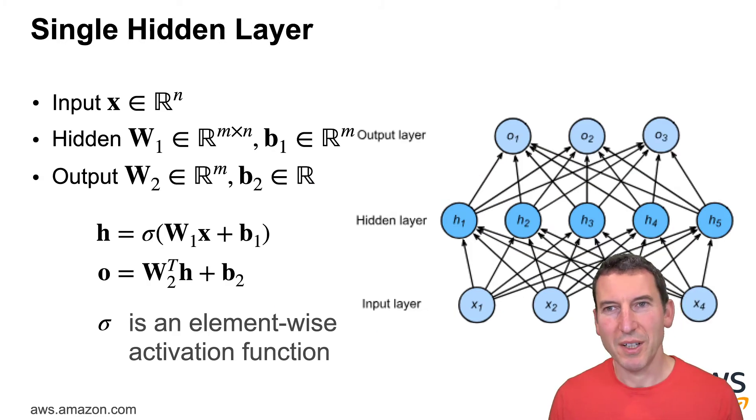You have an input X in Rn, you have some hidden weight matrix W1 and you have an output weight matrix W2. So you have basically H is some non-linearity of W1X plus B1 and then the output is W2H plus B. Conveniently, sigma is some element-wise non-linear activation function.